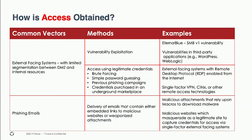How is access obtained? Two major common attack vectors are externally facing systems exposed to the internet — with very limited segmentation between DMZ and internal resources — and phishing emails. Public-facing systems are attacked constantly. If they don't have MFA and other controls, it's going to be an issue. Phishing emails are very common and very easy to execute from the attacker's side.